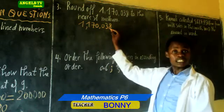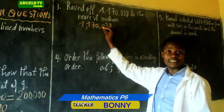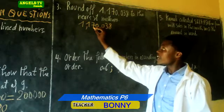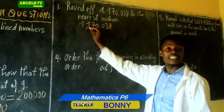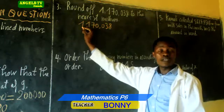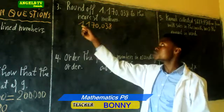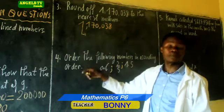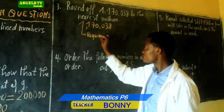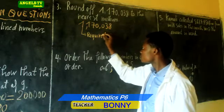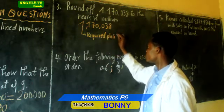Going through the place values: 1s, tens, hundreds, thousands, ten thousands, hundred thousands, and millions. The number that belongs to millions is the required place value.